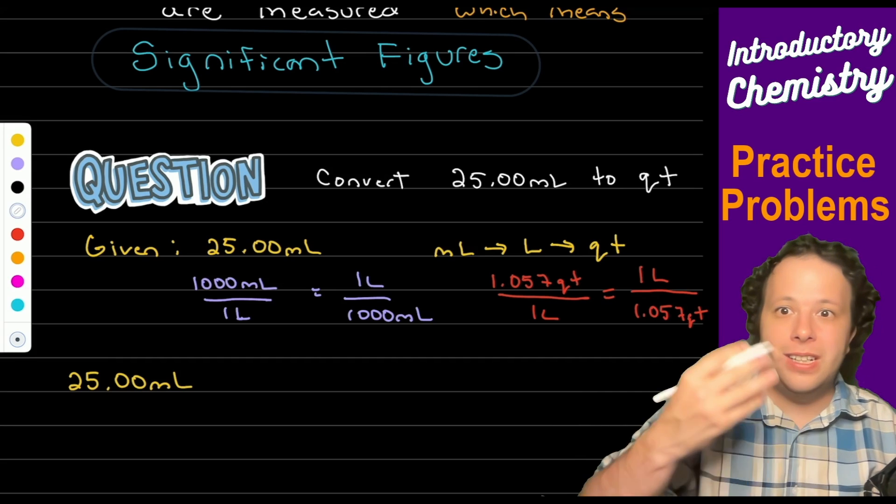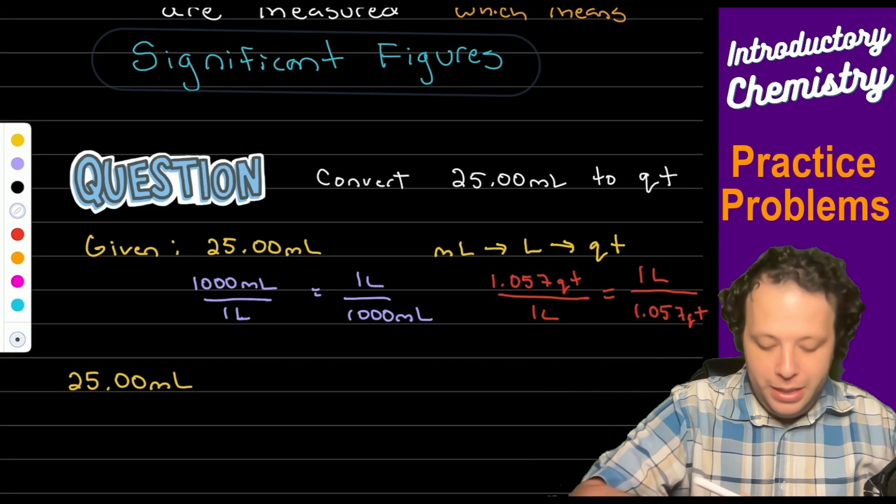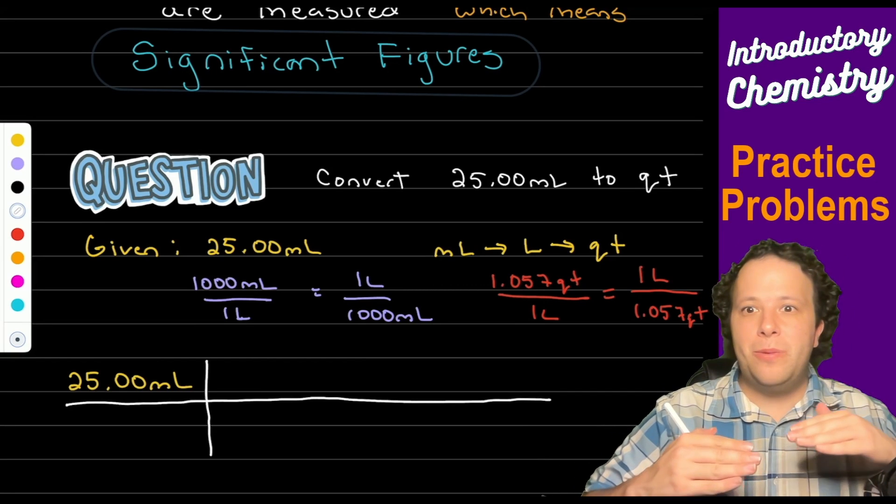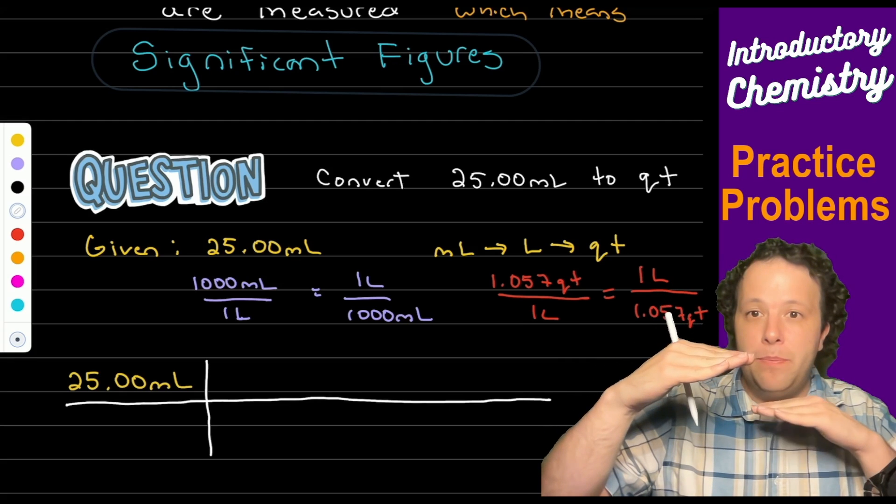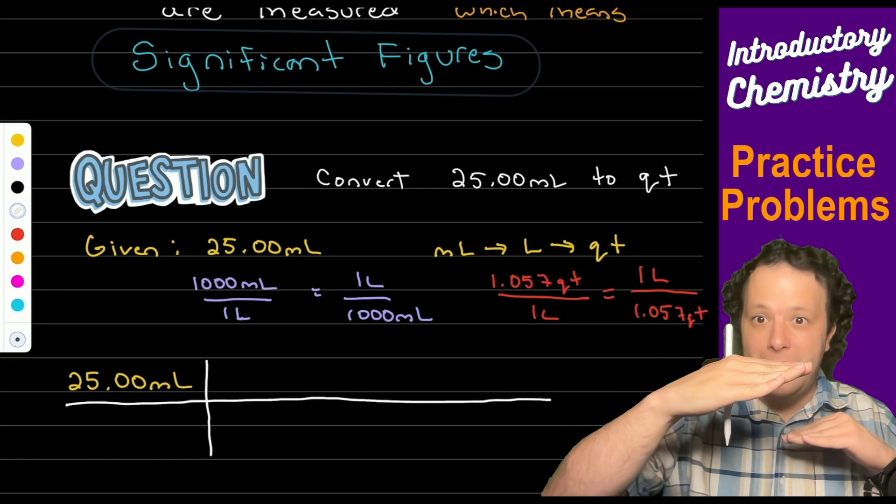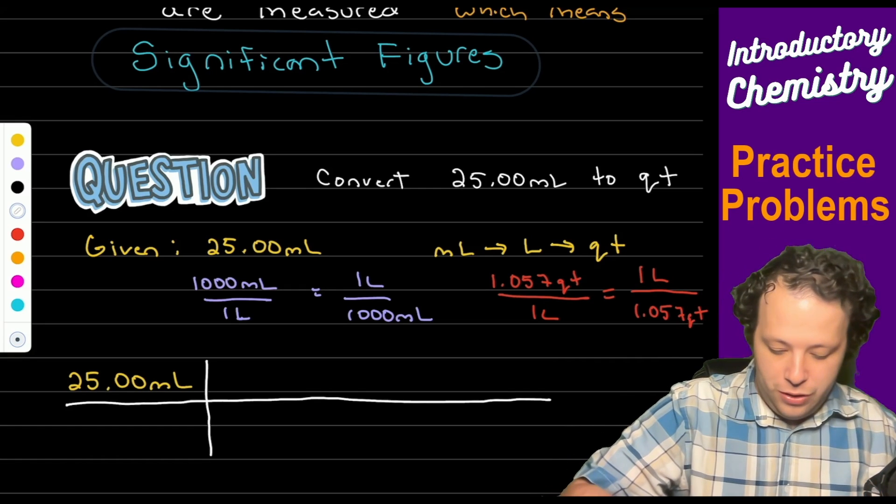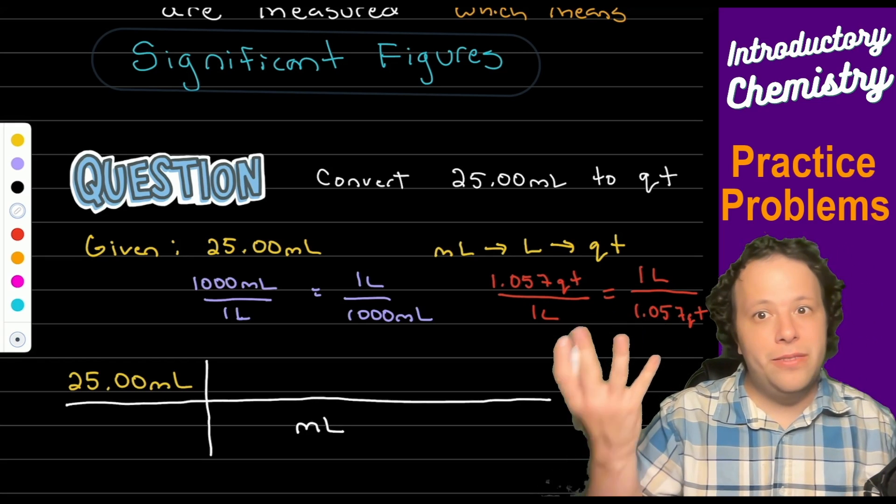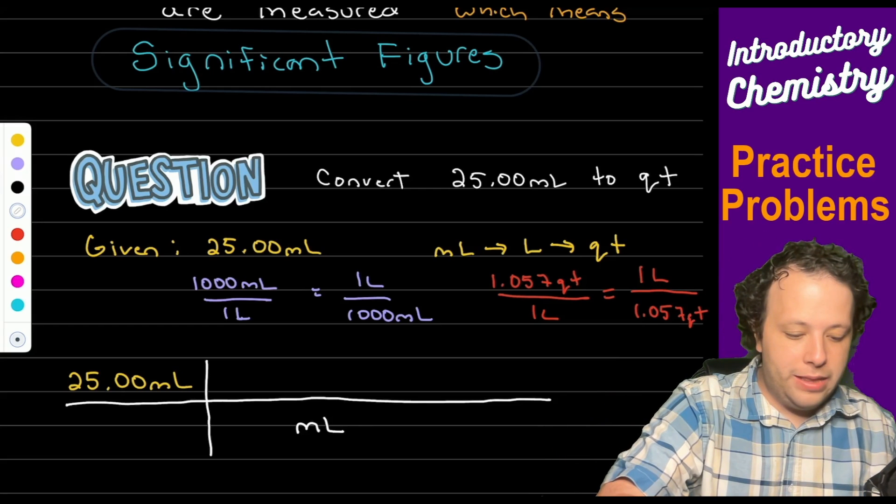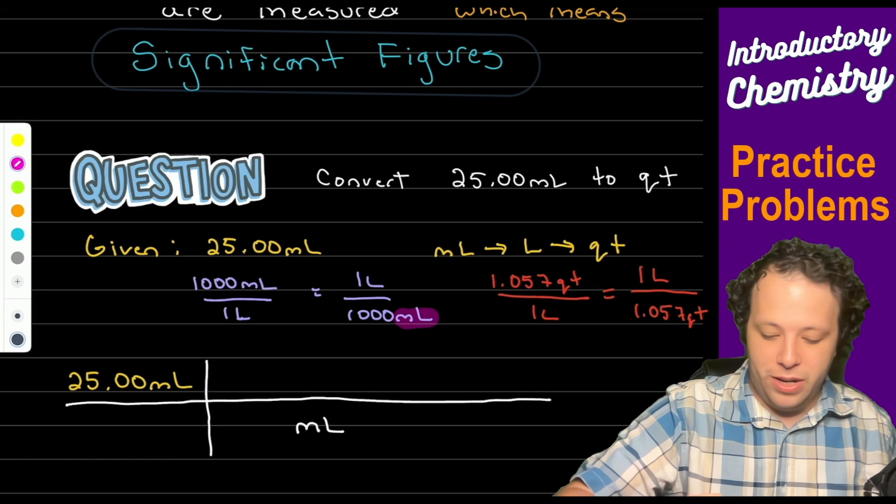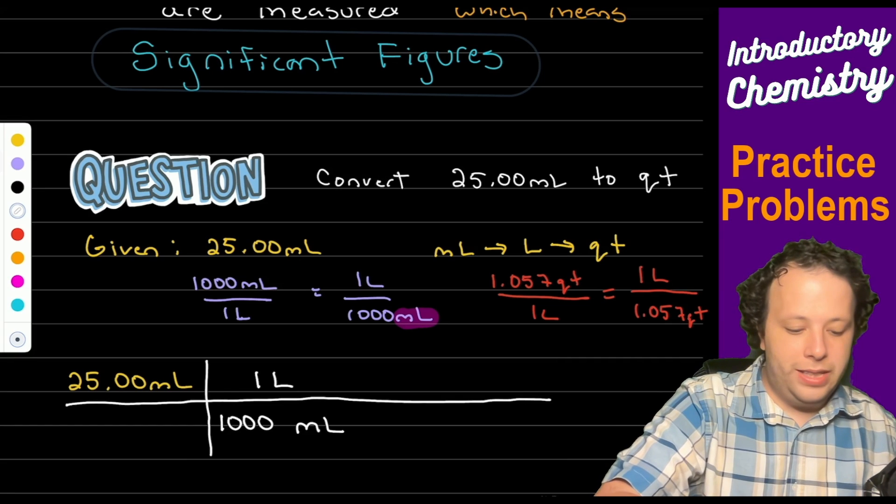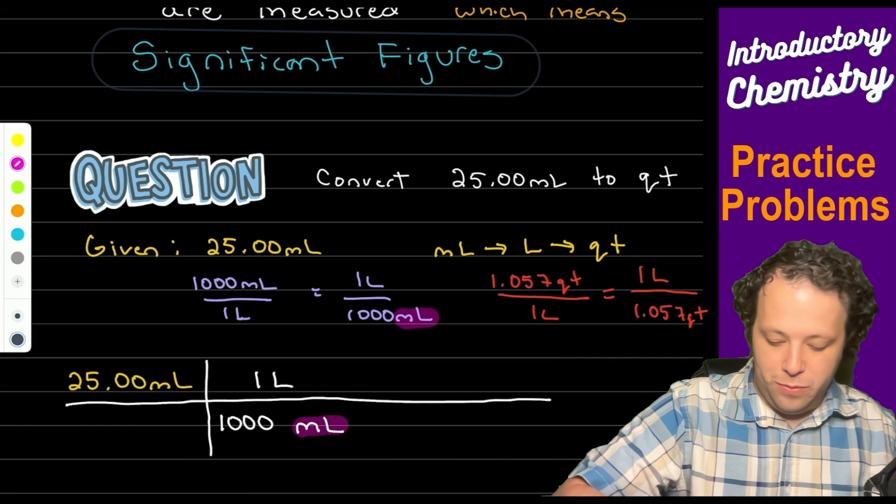And what we're going to do, we're going to let the units guide your thinking. Meaning your units need to be opposite and cancel. So we see milliliters on top right now. We need it to be opposite to cancel. So milliliters needs to be down here. So we have 1,000 mls is one liter. We notice as a result milliliters cancel.